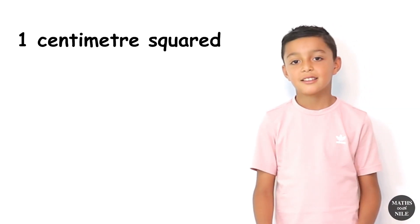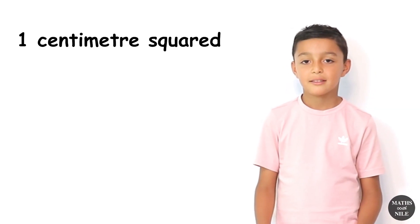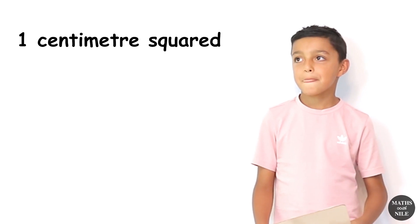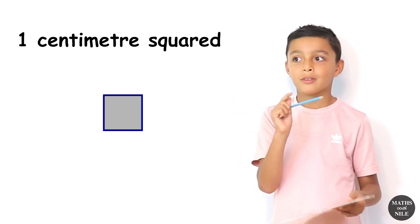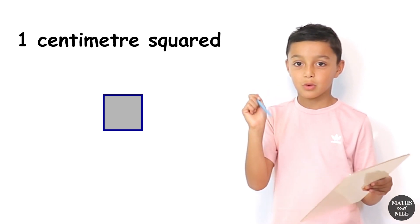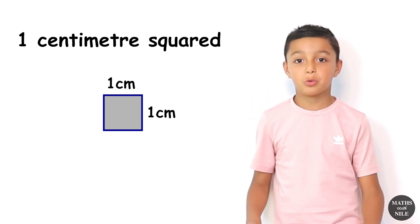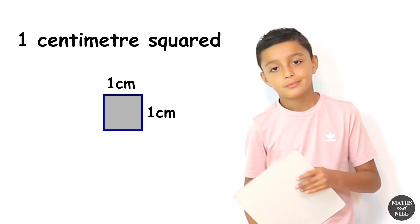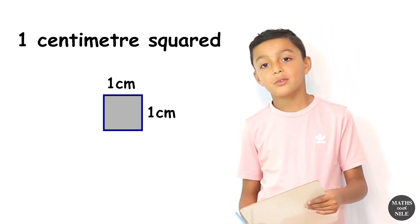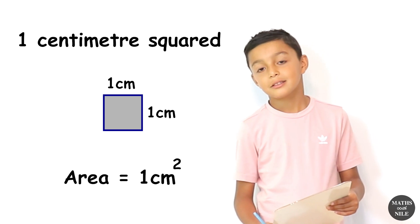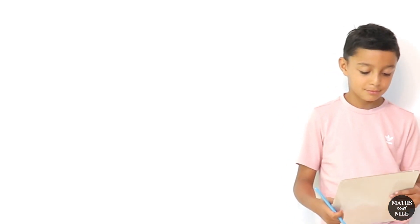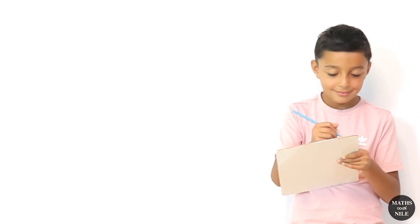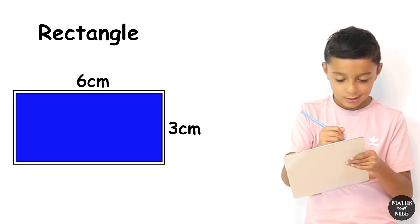Do you know what a one centimetre square box is? It would be a square, and it's one centimetre on the length and width. Brilliant. What is the area of that little box? One centimetre squared. So let's draw one centimetre squared boxes in our first rectangle. Can you do that for us? Yes.